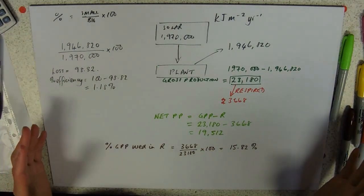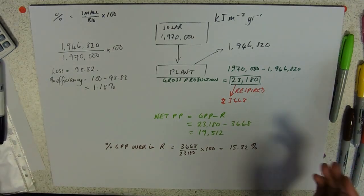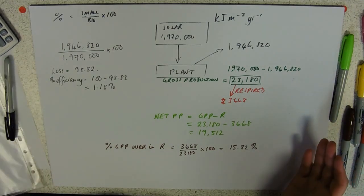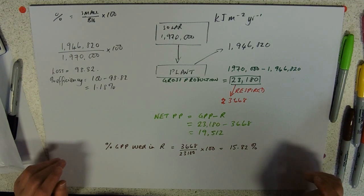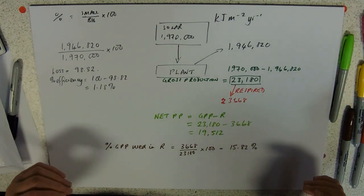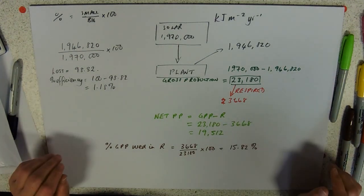Remember, think about what you're doing. You're recognizing gross production, net production, and you should be able to calculate the percentages of transfer from anywhere to anywhere.